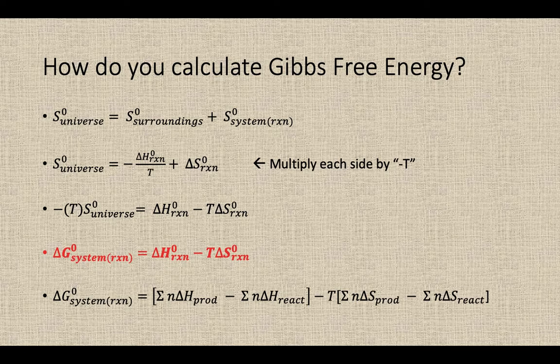So if we expand that equation just a little bit, the delta H of reaction is the products minus reactants, then you have T times the delta S of the products minus the reactants.